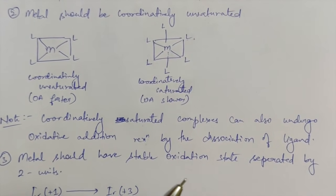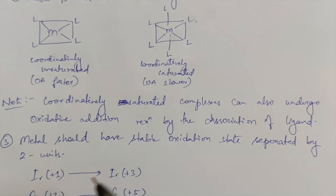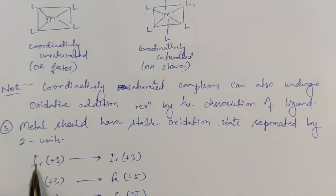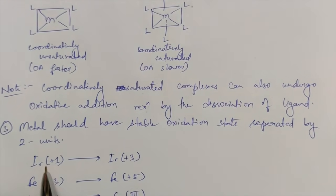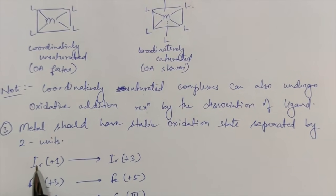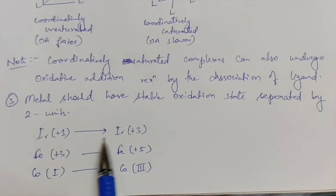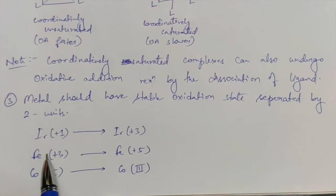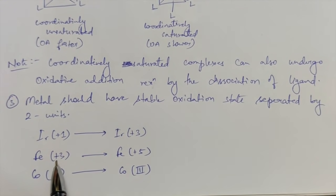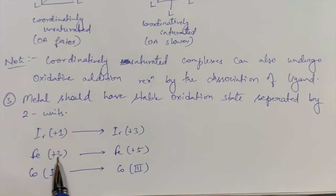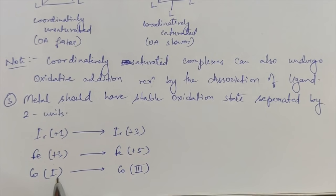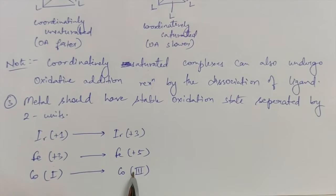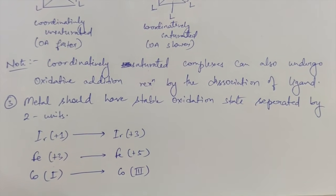Generally only coordinatively unsaturated complexes give oxidative addition. Next, the metal should have a stable oxidation state separated by two units. Whenever oxidative addition takes place the oxidation state of metal changes by two units. For example, iridium can change from plus one to plus three, iron can change from plus three to plus five, and cobalt can change from plus one to plus three.